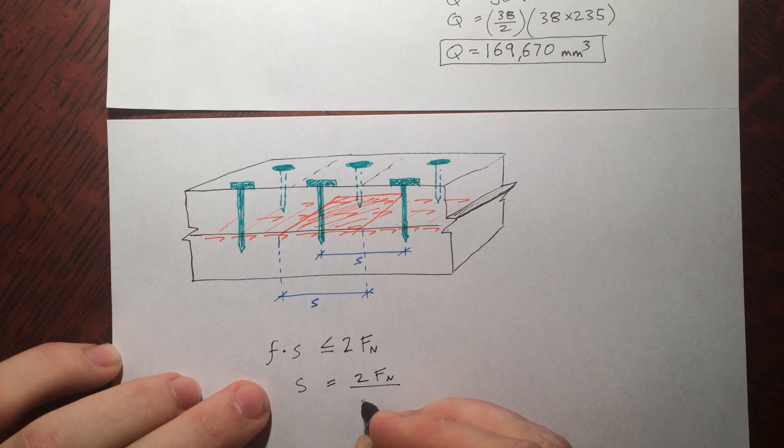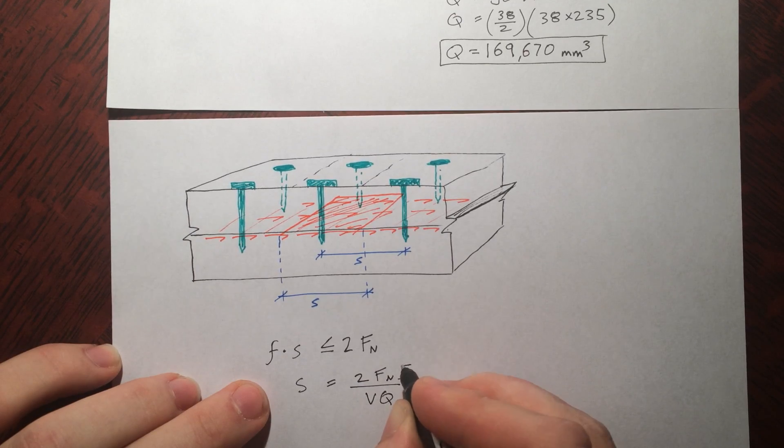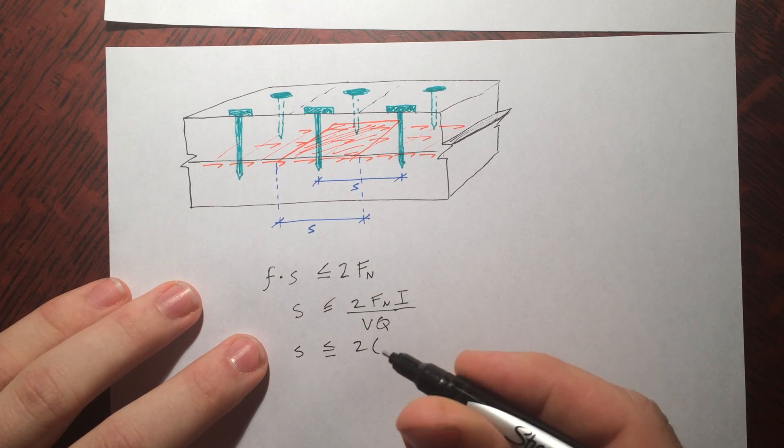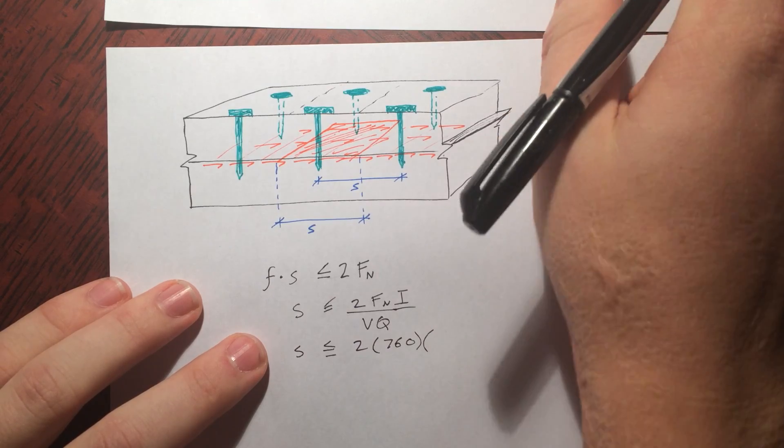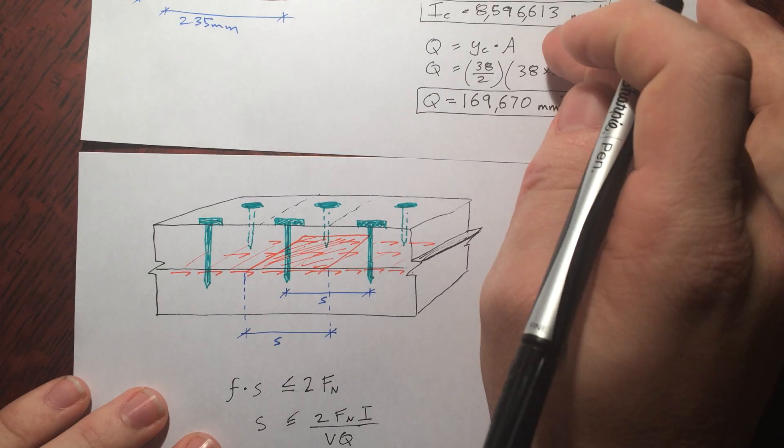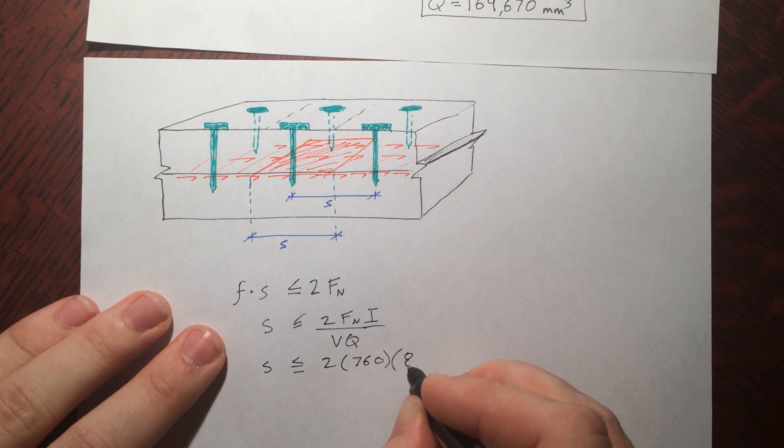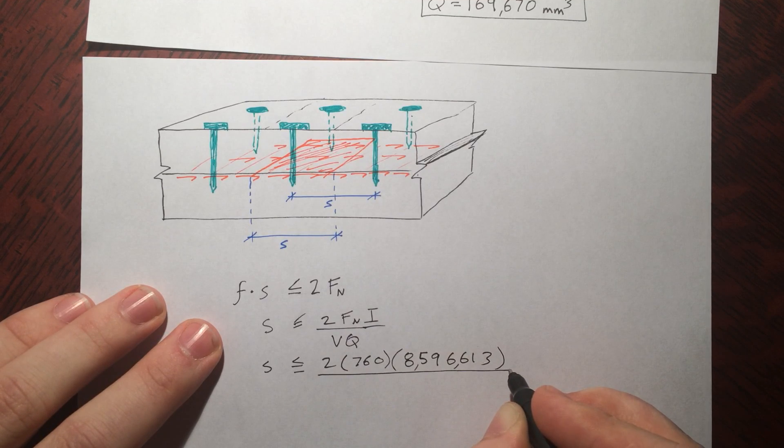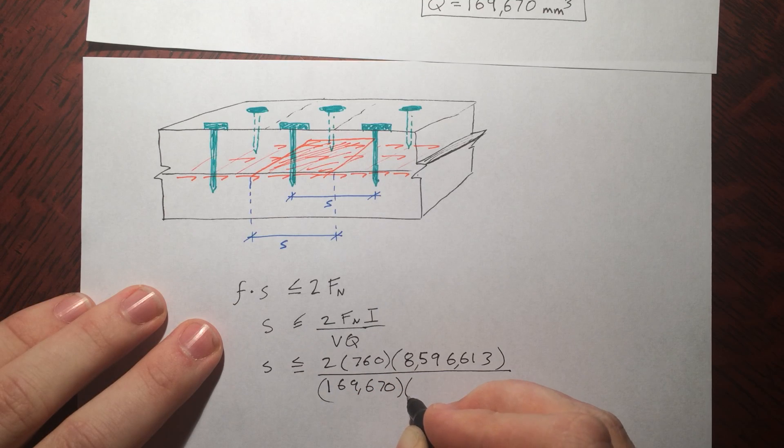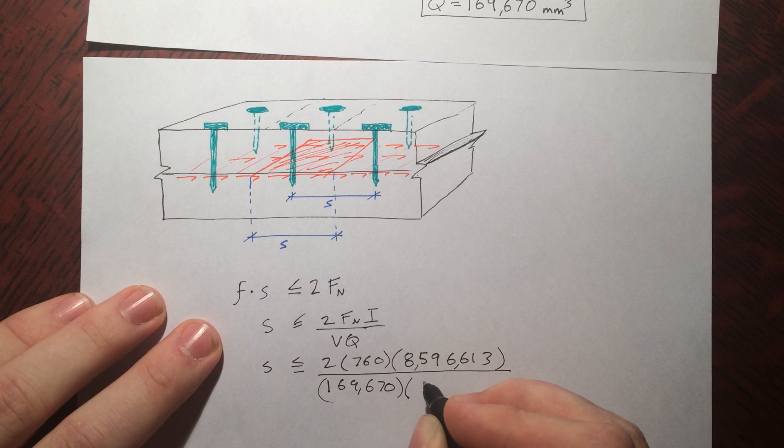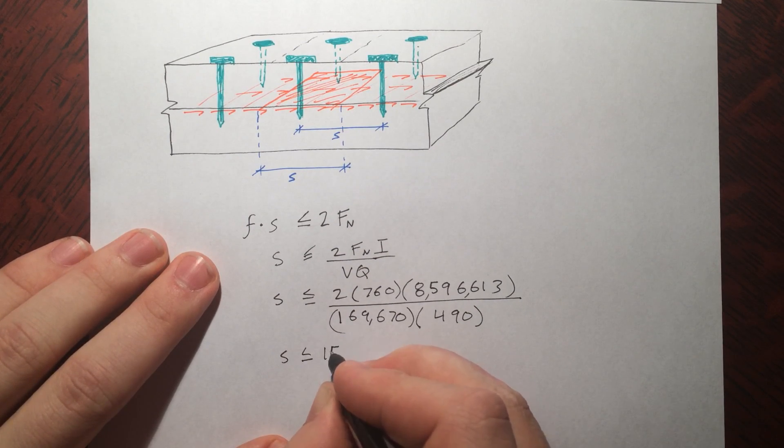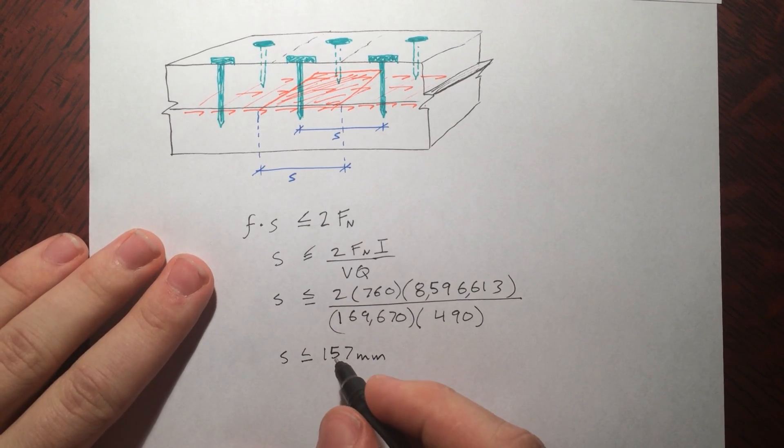F was VQ over I. Here we go. And then when we work this out, it turns out to be... So S has to be less than or equal to 157 millimeters.